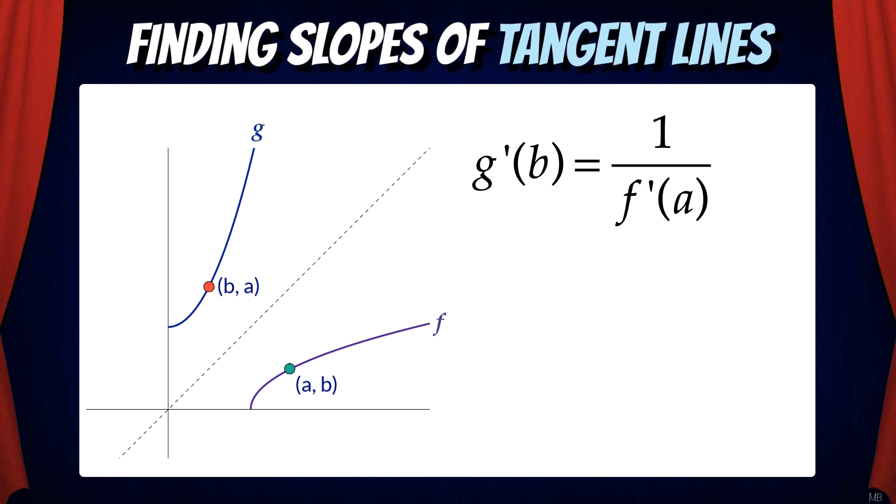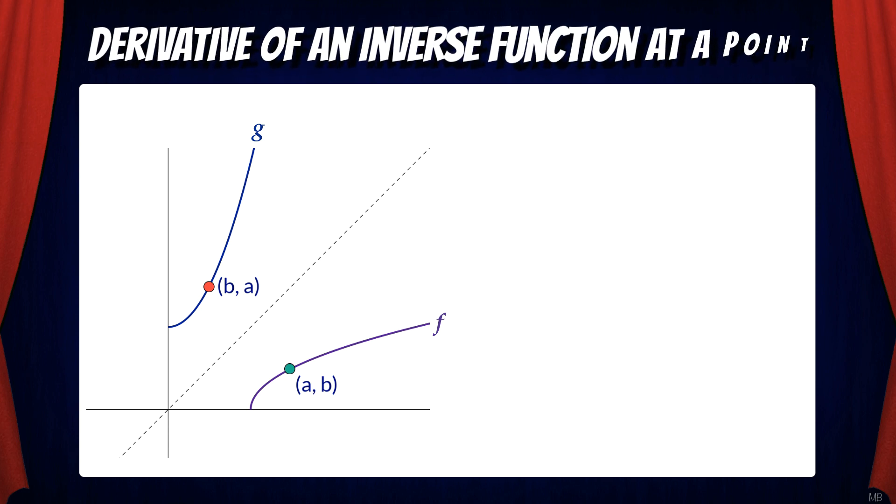But there's something curious to observe here. g of b equals a. That means g prime of b equals 1 over f prime of g of b. Take a moment and convince yourself of this by reviewing the diagram and the equations. So now we can summarize this.